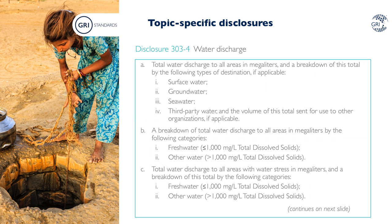Disclosure 303-4 requires organizations to disclose quantitative information about their water discharge. Organizations are required to report total water discharge to all areas broken down by destination, which includes surface water, groundwater, seawater and third-party water. If an organization discharges water to third parties, it is required to report the volume sent for use by other organizations, where applicable. This speaks to positive practices of circular water management and efforts to reduce primary water withdrawal. The discharge destinations are aligned with withdrawal sources, with the exception of produced water, allowing a water balance to be established and an understanding of the organization's impact on specific types of water resources.